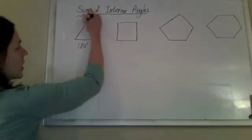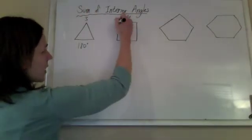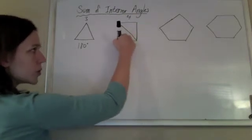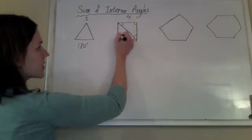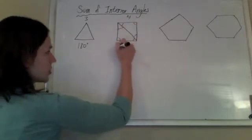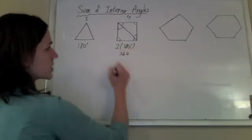So that's three sides. If we have four sides, if I were to draw this, I have two triangles, right? And each triangle has 180 degrees. So I have two times 180 degrees, which is 360.